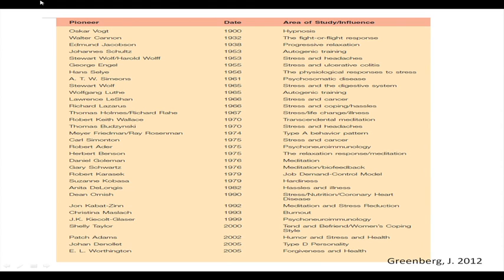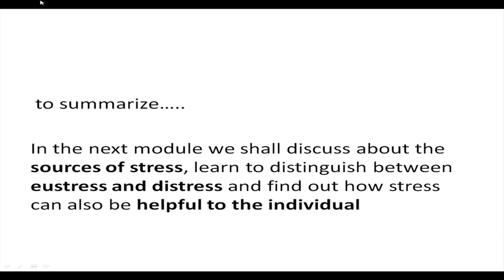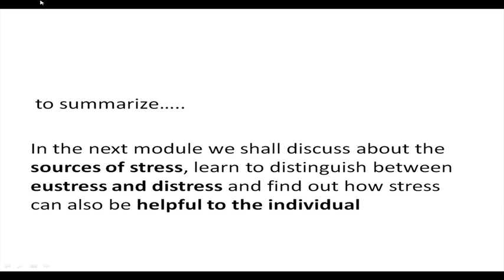Benson and Jacobson later worked on relaxation training. Benson and Jacobson showed that with relaxation you can actually reduce the stress response, and this was identified as one of the major ways to relieve stress. To summarize, we have seen what stress is and why individuals differ in their stress response, and we have explored the history and genesis of stress. In the next module we shall discuss the sources of stress, learn to distinguish between eustress and distress, and find out how stress can also be helpful to the individual.